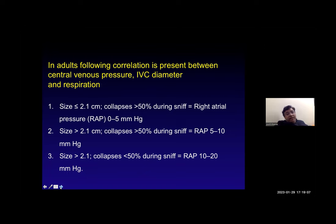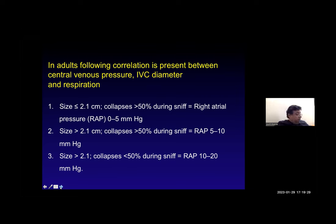An IVC size less than 2.1 centimeters that collapses more than 50 percent during a sniff equals a right atrial pressure of 0 to 5 mmHg. If IVC size is greater than 2.1 centimeters and the collapse is greater than 50 percent during a sniff, right atrial pressure is 5 to 10 mmHg. If the size is greater than 2.1 centimeters and collapse is less than 50 percent, right atrial pressure is 10 to 20 mmHg.